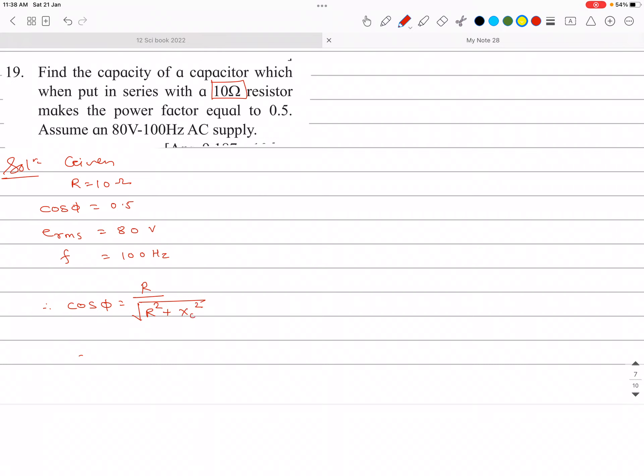Now we substitute values. It is 0.5 is equal to this R is 10 divided by under root 10 square plus XC square. Now we have to simplify this.